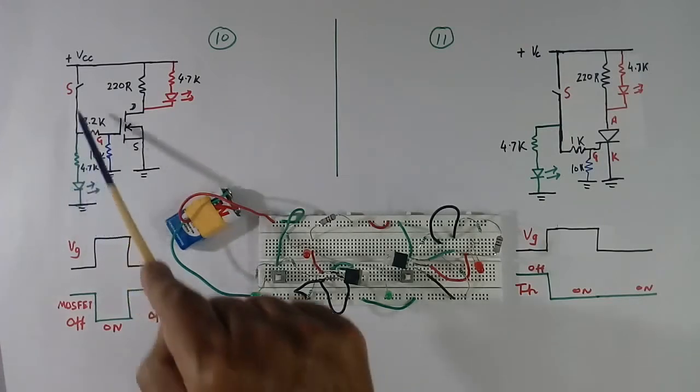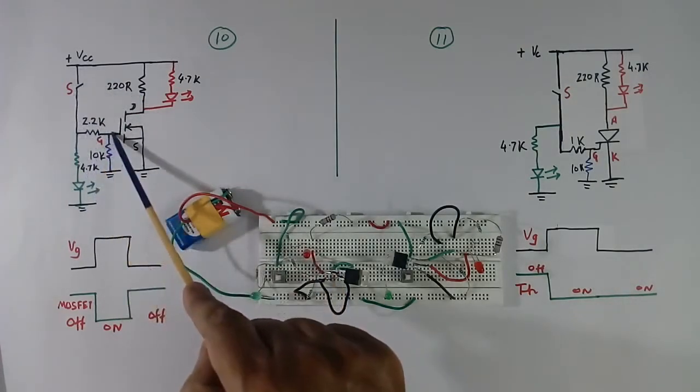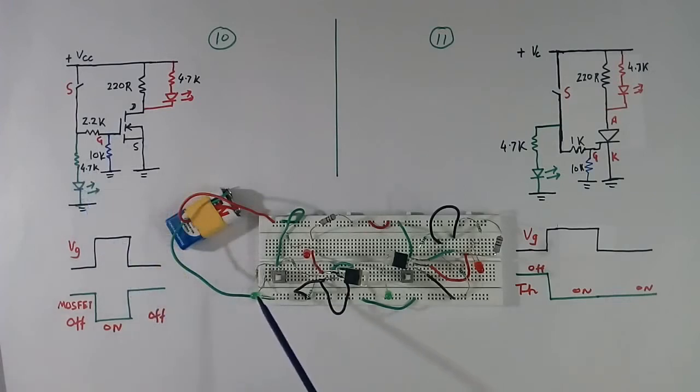This will show that gate pulse is going. Green LED means gate pulse is ON to this MOSFET.